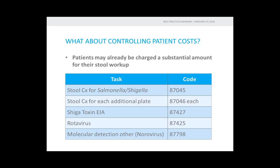Regarding patient costs, we might already be charging patients substantially for stool workup. CPT code 87045 for a standard stool culture covers only Salmonella and Shigella, but you get an additional CPT code for each additional culture plate — campylobacter, TCBS for Vibrio, etc. Shigatoxin EIA, rotavirus EIA, and norovirus by molecular each have their own CPT codes as well. So the total charges for a complete traditional workup could actually be close to the cost of a multiplex panel, potentially making it cost-neutral for your patients depending on your practices.